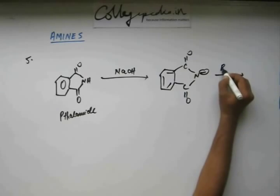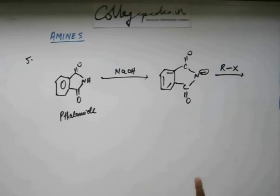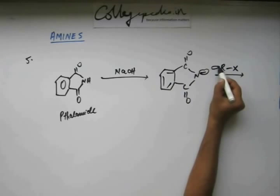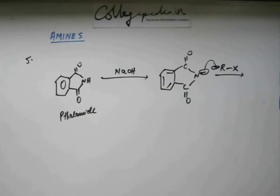Now at this stage, if you are adding an alkyl halide, that alkyl halide has to be a 1° alkyl halide because if that's not a 1° alkyl halide, this SN2 reaction will not be possible. With 2° alkyl halide, the rate decreases, and with 3° alkyl halide it is not possible.